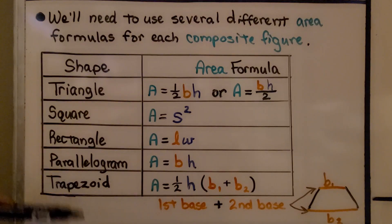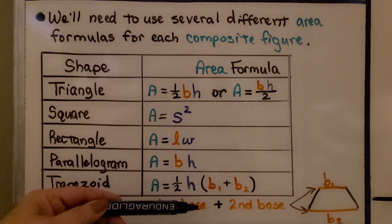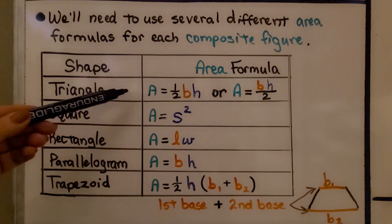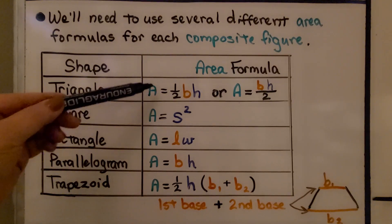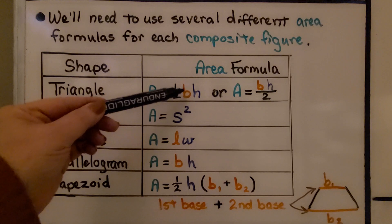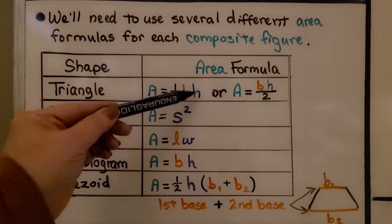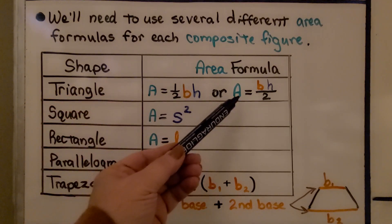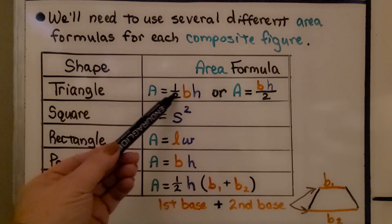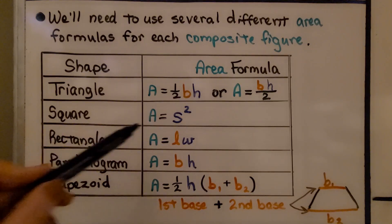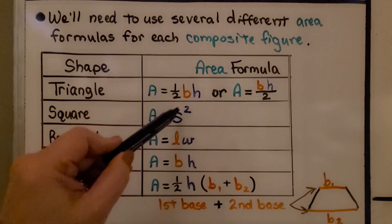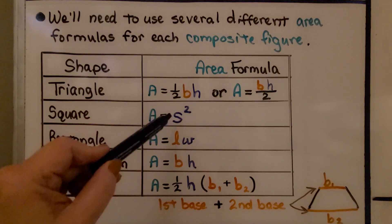So here we have our shapes and the area formula for each shape. We have our triangle, which we discussed in the last video — the area is equal to half times the base times the height, or the base times the height divided by 2. A square is side times side, or side squared.